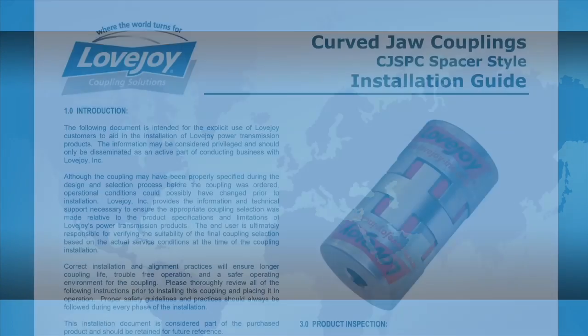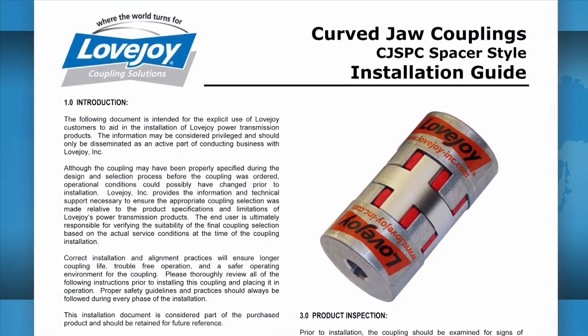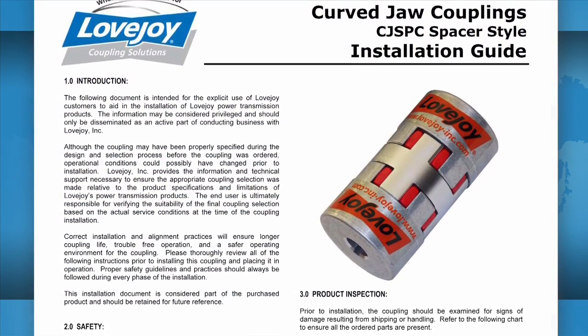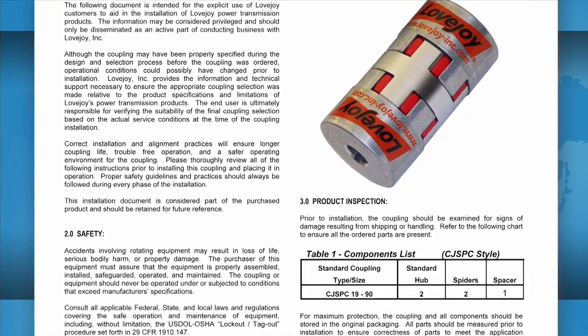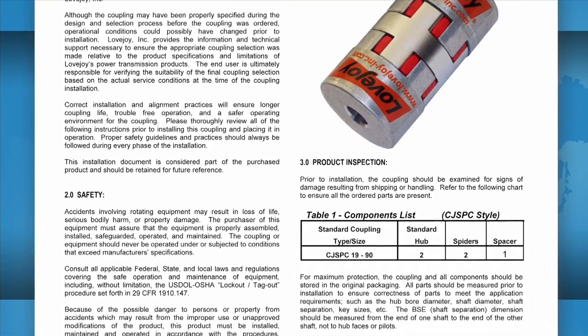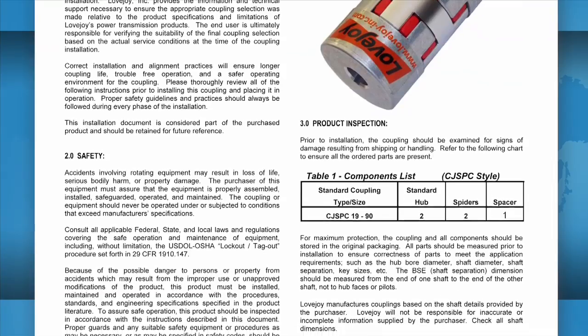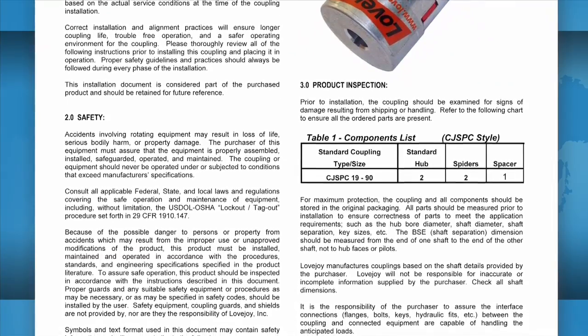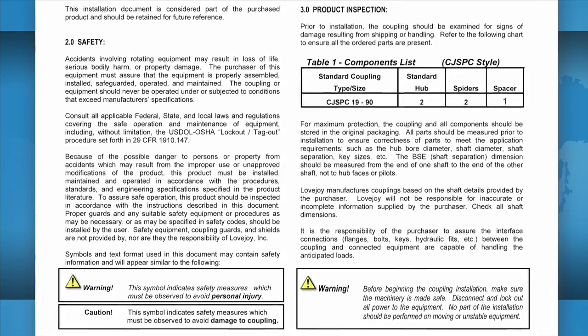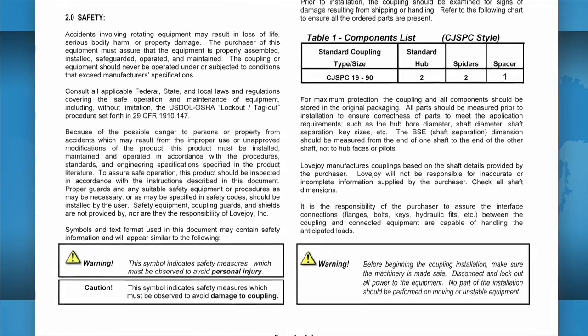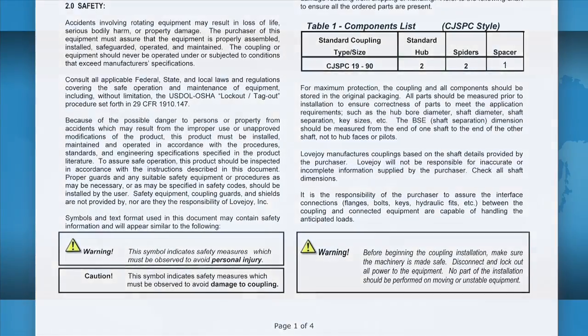It is always recommended to keep a copy of the specific coupling installation guide readily available when installing your Lovejoy coupling. The installation guide contains charts that show the necessary details including allowable coupling misalignment and torque settings for tightening the set screws and bolts. Some installation guides may contain performance and dimensional information important when confirming the accuracy of the coupling selection.